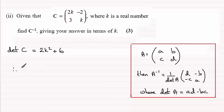Therefore we're in a position now to get the inverse of C, which equals one divided by the determinant. So we've got one divided by 2K² + 6, and that is multiplied by the matrix where we switch these two elements around, so we've got K there and 2K down here.